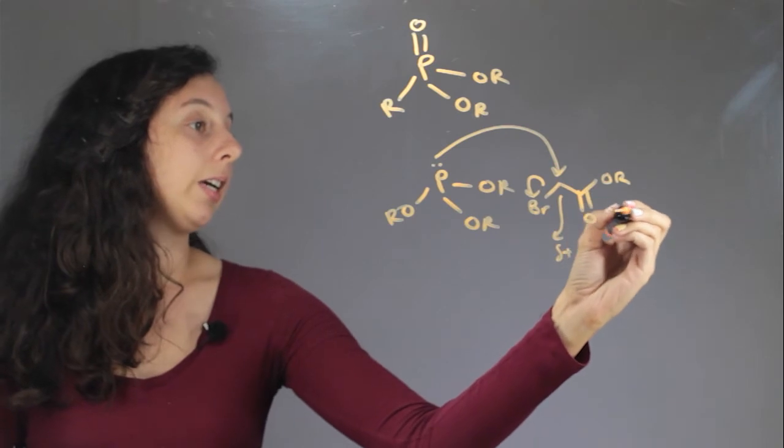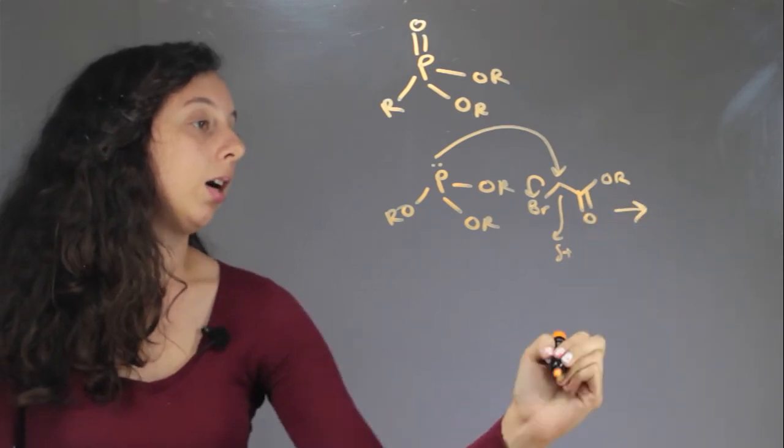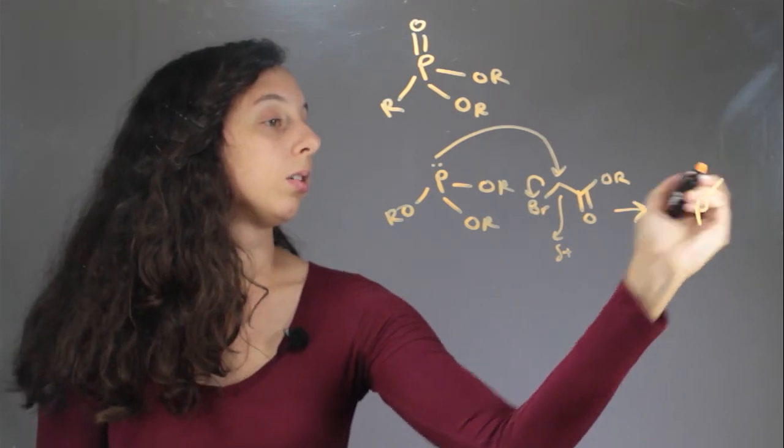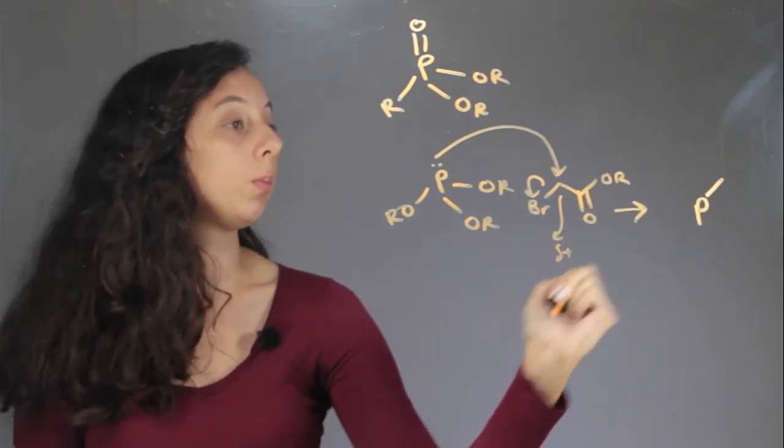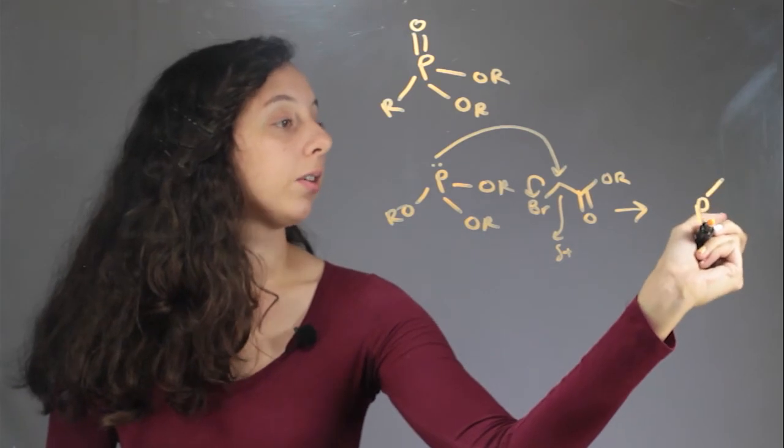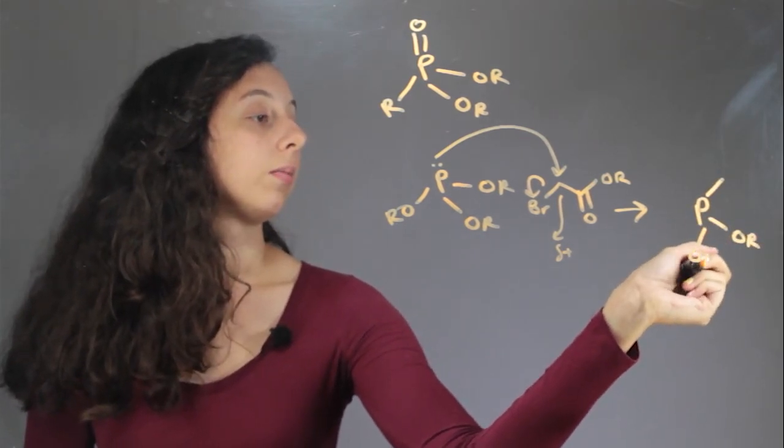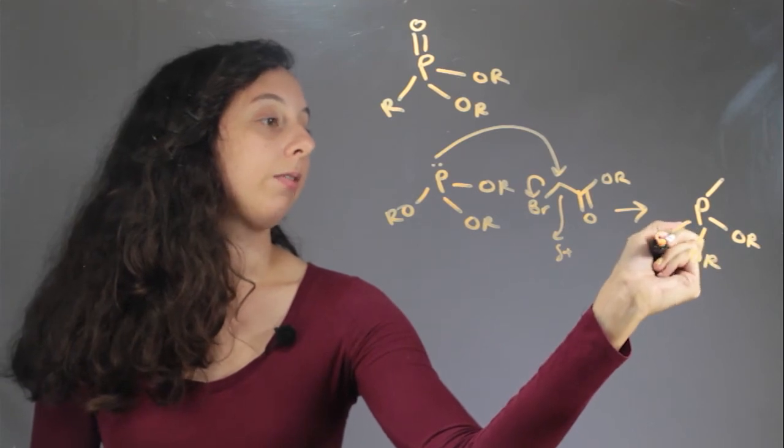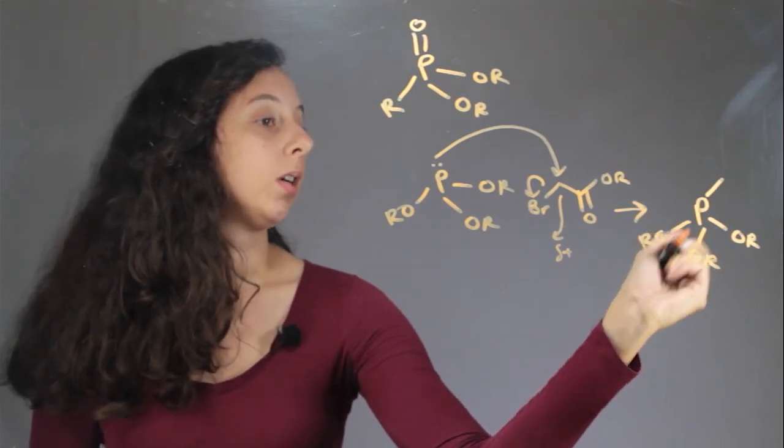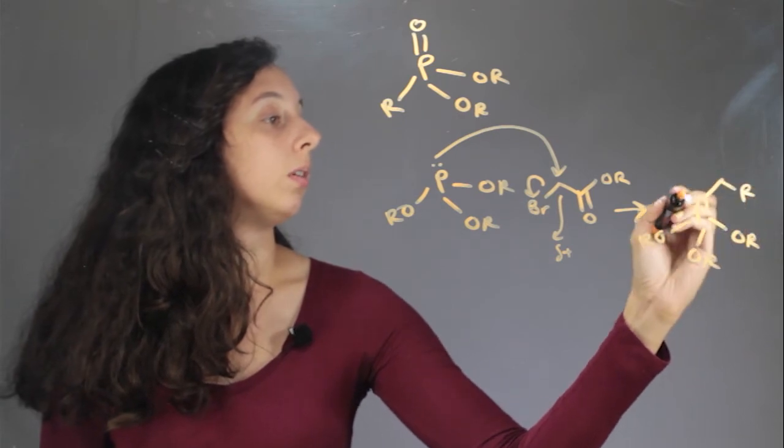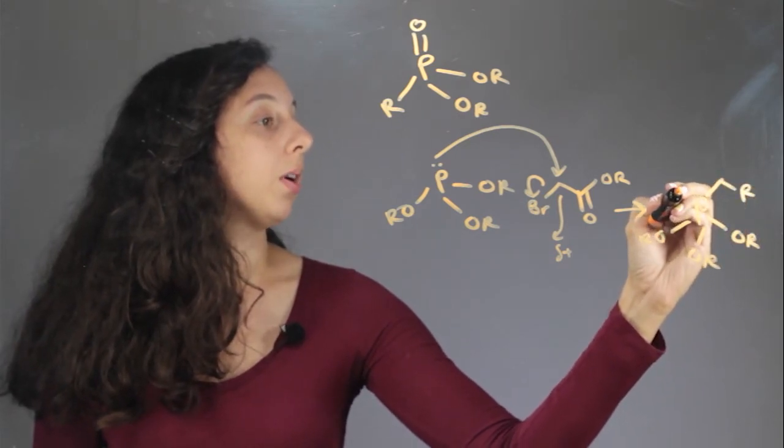So your intermediate, and from now on I'm just going to go ahead and draw this whole group as an R group. So you still have your three OR groups plus you have your now attached R group and it has a positive charge.